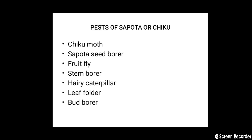These are the different major as well as minor pests of Sapota, also called as Chiku. First is the Chiku moth, then Sapota seed borer, then fruit fly, stem borer, hairy caterpillar, leaf folder, and bud borer on Chiku. Let us see them one by one.